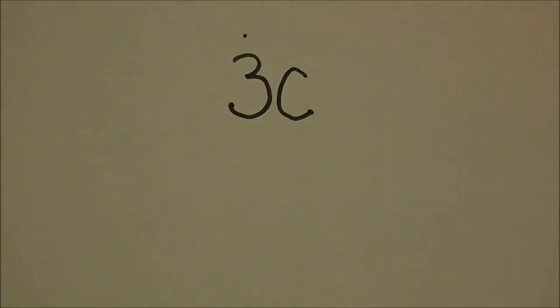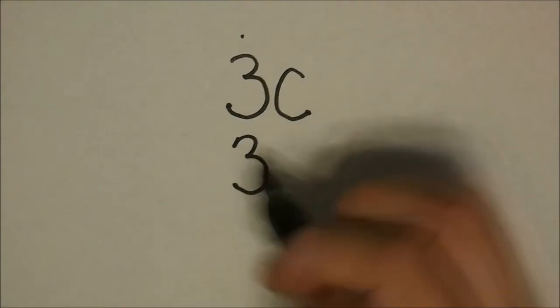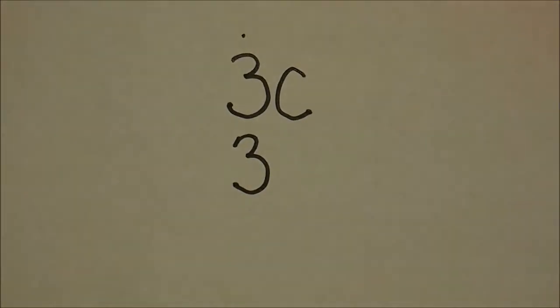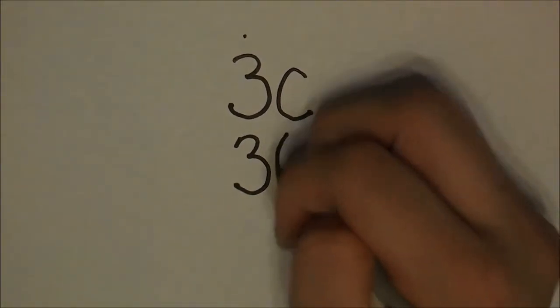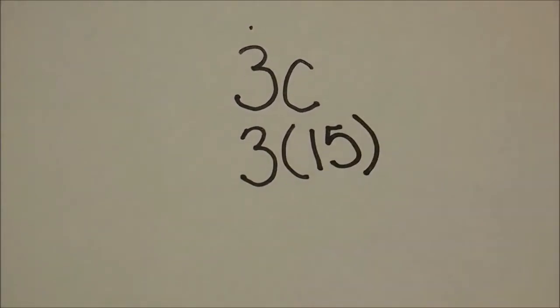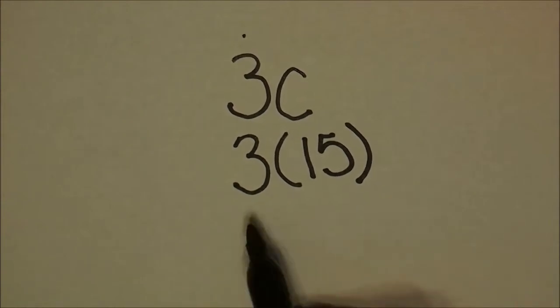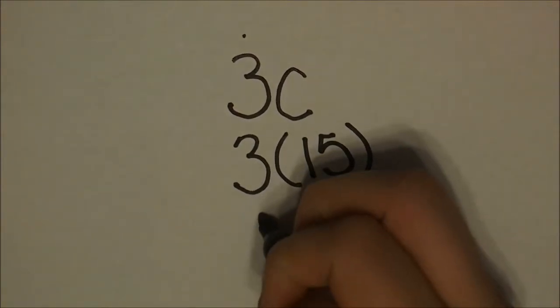My second step is to substitute the value in for the variable. I bring my three down because I haven't done anything to it. And in place of C, I'm going to write 15 because each CD costs $15. Now I solve. Three times 15 is 45.